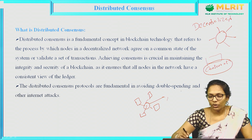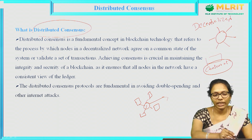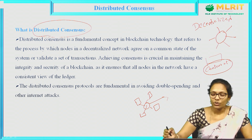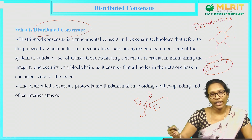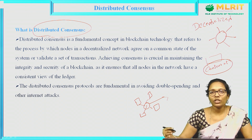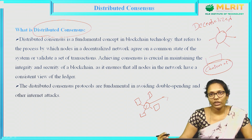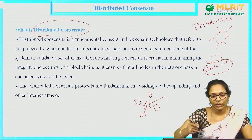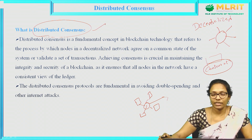That agreement is called Distributed Consensus — whether to accept the transaction or to reject the transaction based on the validity of the transaction. Whether the transaction is valid or not can be decided by using this Distributed Consensus.